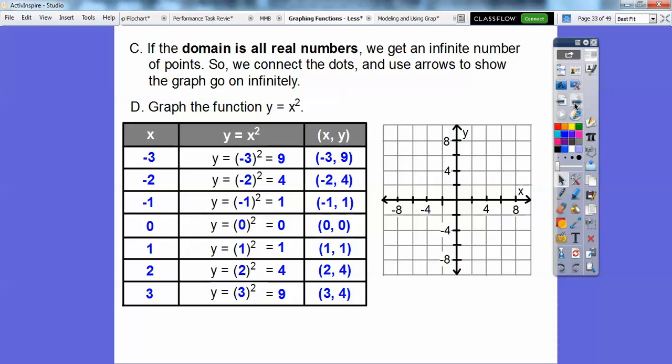Let's show what the graph is. Negative 3, 9 would be to the left 3, up 9, so right about there. Negative 2, 4 would be a point right there, and so on. Since it's all real numbers, we connect them and it goes up like that. This is called a parabola. Parabolas come from x squared equations.